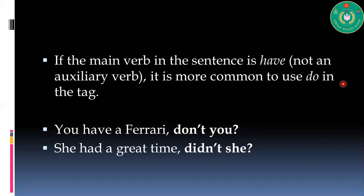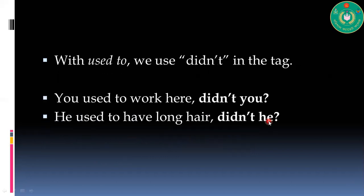When the main version is 'have', not an auxiliary verb, it is more common to use 'do' in the tag. You have a Ferrari, don't you? She had a great time, didn't she? If you in this sentence use 'have' or 'had', it won't be a problem, but this is the standard one. With 'used to', use 'didn't' in the tag. You used to work here, didn't you? He used to have long hair, didn't he?